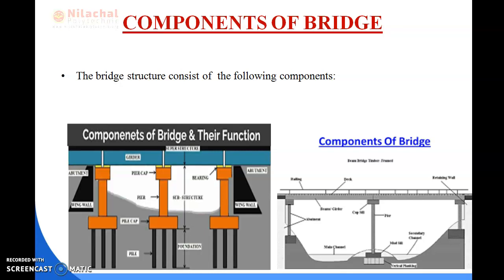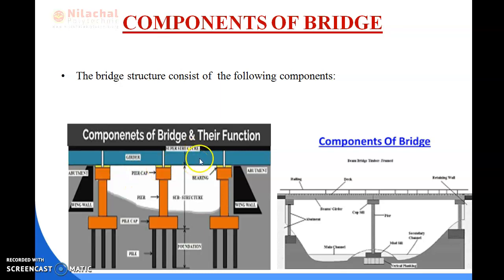Next we discuss abutments. In this picture, this is your abutment. Abutments are vertical structures used to retain the earth behind the structure. In a bridge, behind the structure there is only soil present, so to retain the soil we construct the abutment. The dead and live loads from the bridge superstructure are supported by the bridge abutment. The abutment is also subjected to lateral pressure, mainly from the approaches embankment.